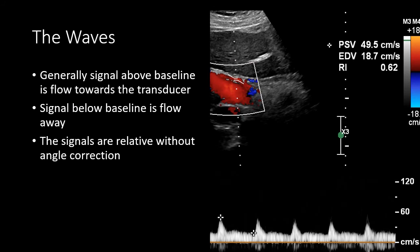Now let's discuss the waves generated by our spectral wave imaging. The wave is a representation of the relative velocity across the cardiac cycle. Waves above the baseline tend to reflect motion towards the probe. Waves below the baseline tend to reflect motion away from the probe. Remember, the motion we're talking about is only the motion within the gate. We can adjust our scale and correct for the angle of motion to calculate accurate velocities.